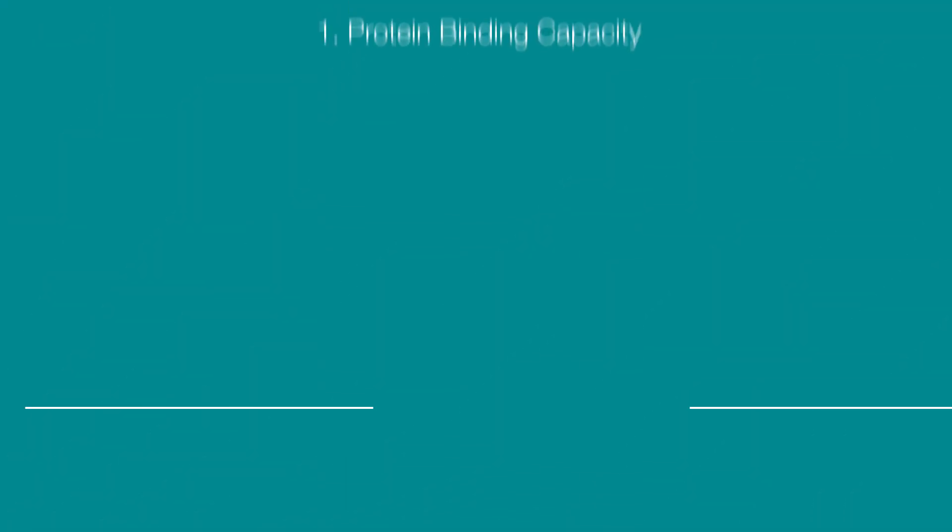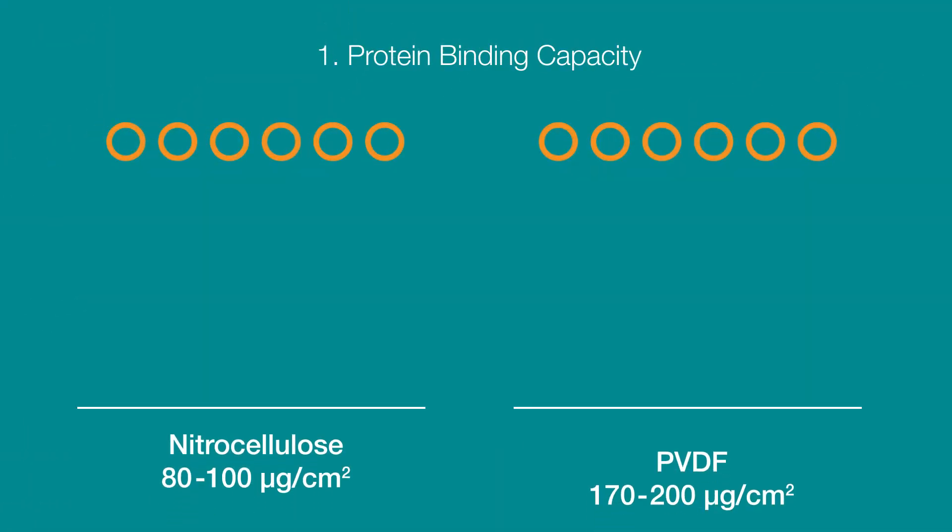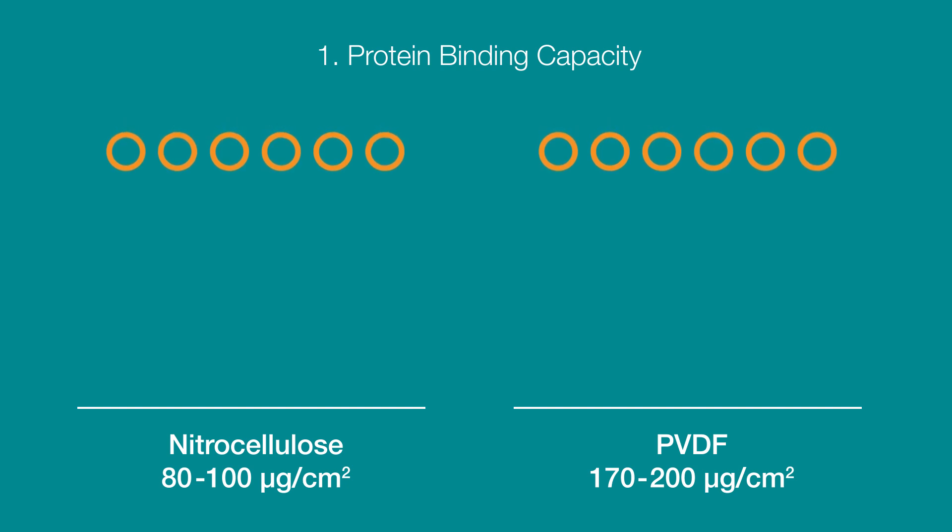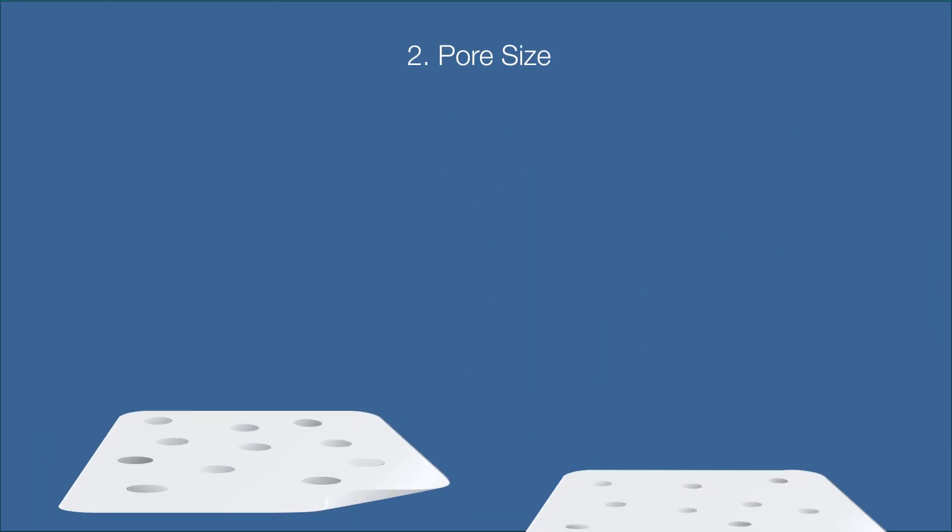The first criterion you should consider is protein binding capacity. In general, PVDF has a higher protein binding capacity than nitrocellulose. This means PVDF is more sensitive but also more prone to background noise. Choose PVDF for applications requiring high sensitivity.